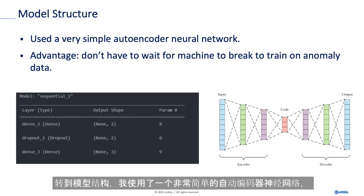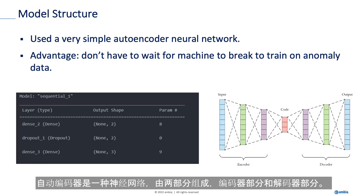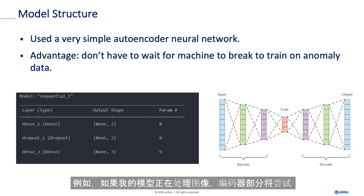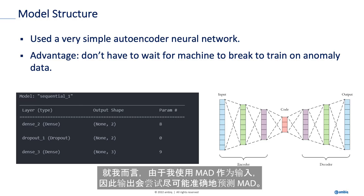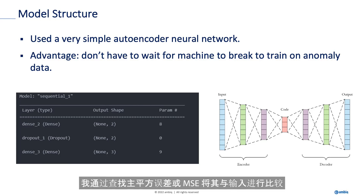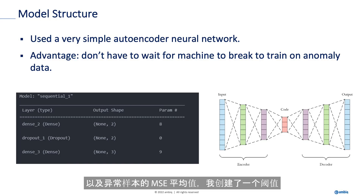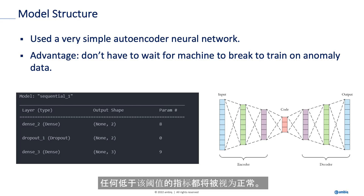Moving on to the model structure, I used a simple autoencoder neural network. An autoencoder is a type of neural network with two parts: the encoder portion and the decoder portion. For example, if my model were working with images, the encoder would identify features important to the image and the decoder would recreate the image. In my case, since I'm using MAD as input, the output attempts to predict the MAD as accurately as possible. I then compare output to input by finding the mean squared error, or MSE. I look at the average MSE of normal samples and anomaly samples, and create a threshold — anything greater than that threshold is considered an anomaly, anything less is considered normal.